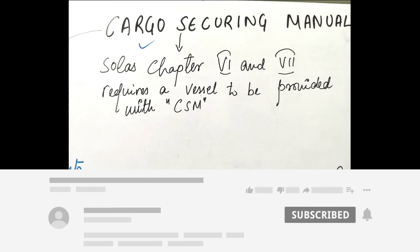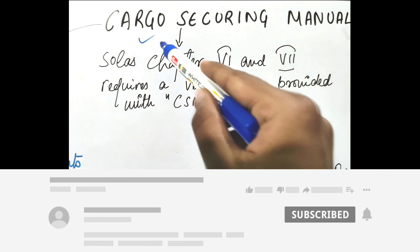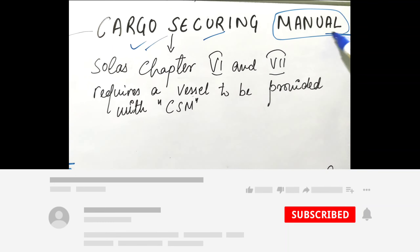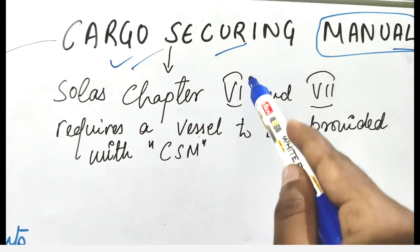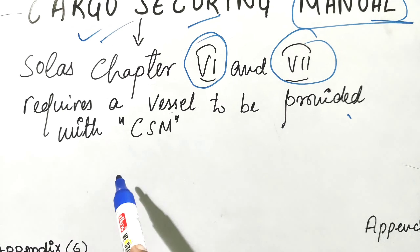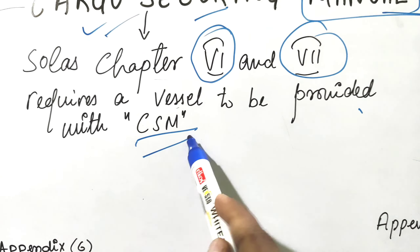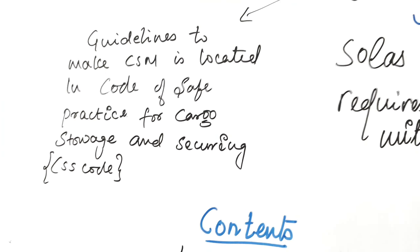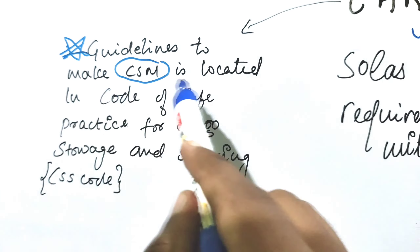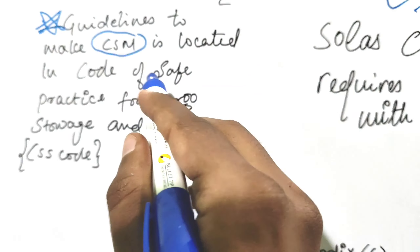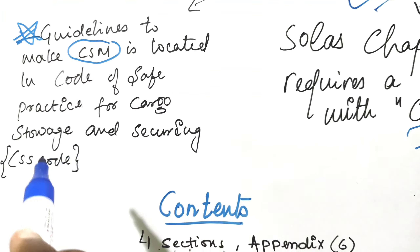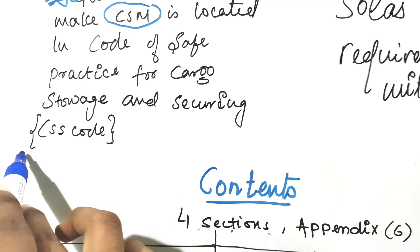Hello and welcome. In this video I am going to discuss about cargo securing manual. According to SOLAS chapters 6 and 7, it requires a vessel to be provided with a cargo securing manual. The guidelines to make the cargo securing manual are located in the Code of Safe Practices for Cargo Storage and Securing, which we call the CSS code.